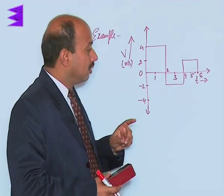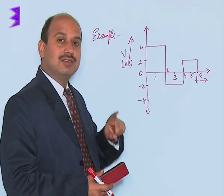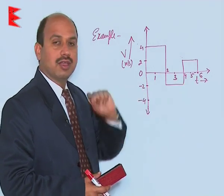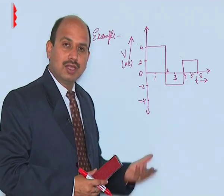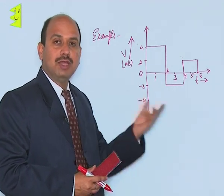Now you have to calculate using this graph distance and displacement in time interval 6 seconds. It means from 0 to 6 seconds how much distance the body has travelled and how much displacement is there.